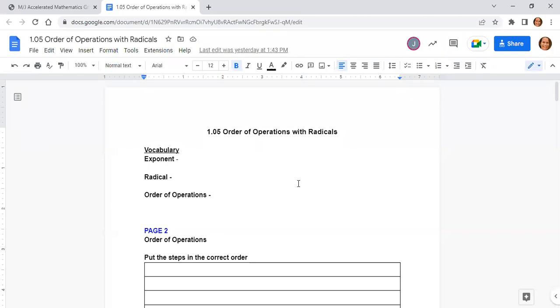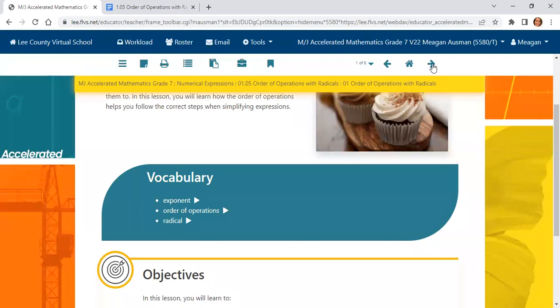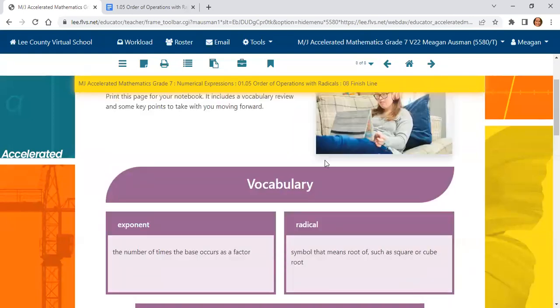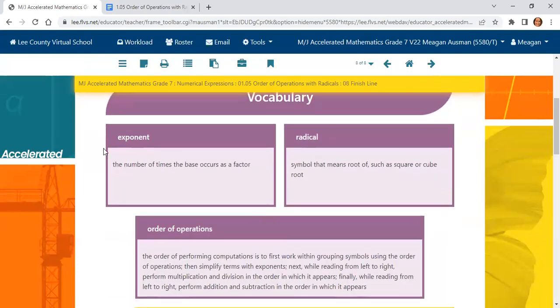Remember to have your note-taking guide in front of you. You can print this and handwrite on it, or you can type on it. And it is important that we write and fill it all out so we cover all the material. I like to start with the vocabulary. Exponent is the number of times the base occurs as a factor. Radical is the symbol that means the root of. So we've used radicals with square roots and cube roots. You could use radicals with other roots, but right now we're just doing square root and cube root.